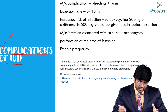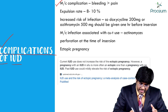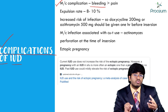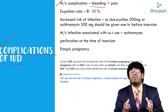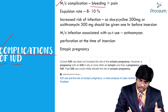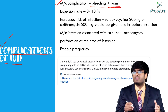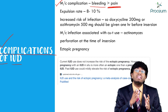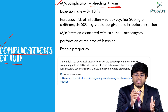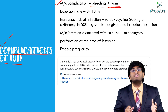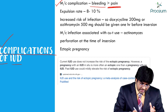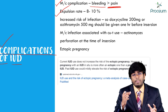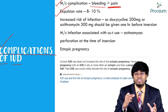Now let's discuss complications of intrauterine devices. The most common complication is irregular menstrual bleeding after placement. Pain is also very common, and pain is one of the most common reasons for removal of an IUD.